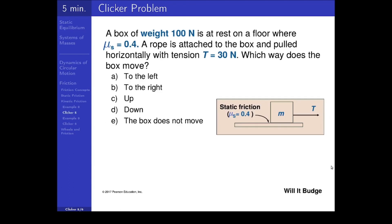Let's try a conceptual problem. A box of weight 100 newtons is at rest on a floor where the coefficient of static friction is 0.4. A rope is attached to the box and pulled horizontally with a tension of 30 newtons. Which way does the box move?